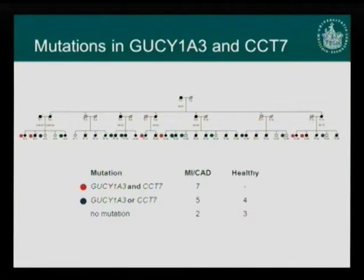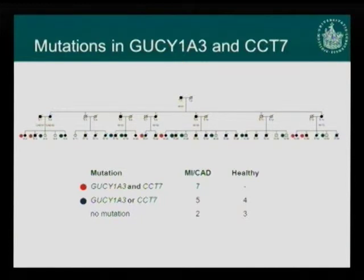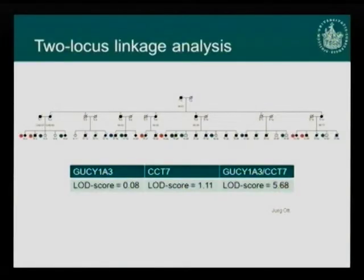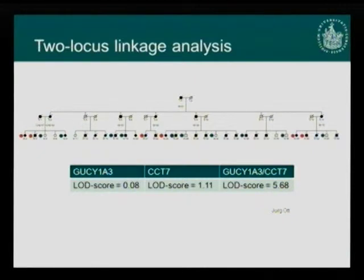Looking at the pedigree: double mutation carriers are shown in red and single mutation carriers in blue. All double mutation carriers are affected with myocardial infarction, and single mutation carriers also have a slightly increased risk. Analyzing GUCY1A3 and CCT7 separately yields no significant LOD score, meaning neither variant co-segregates with disease individually. However, combining GUCY1A3 and CCT7 gives a LOD score of 5.68 — clearly significant, indicating digenic inheritance.